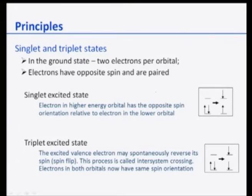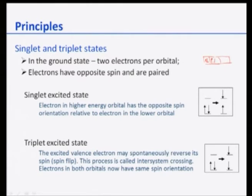Now the principles: there can be two kinds of electron spin states — singlet and triplet. In the ground state, two electrons are present per orbital with opposite spins and are paired. For example, in the s orbital, two electrons have one spin up and one spin down; in the p orbital, six electrons; in d, ten electrons with five up and five down.